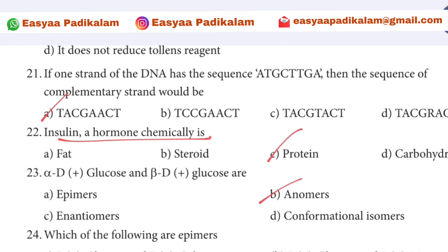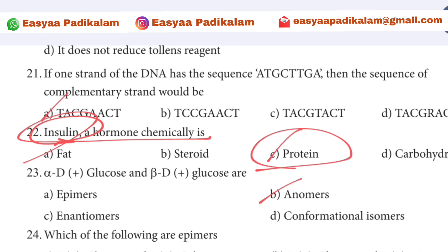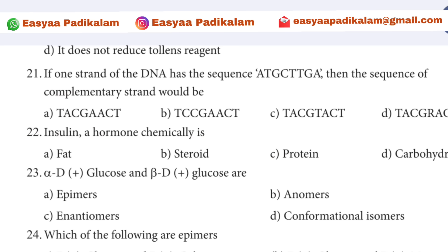22nd question: Insulin — the hormone chemical — means it is a protein. So what we need to recognize is that insulin is a protein hormone.